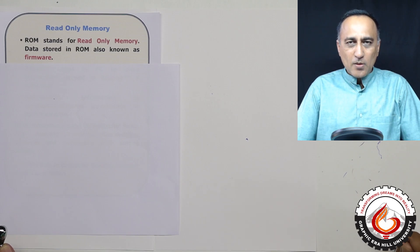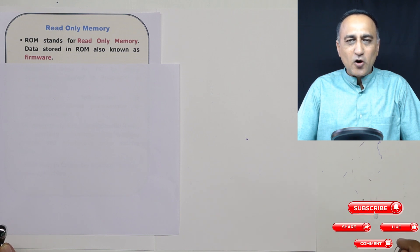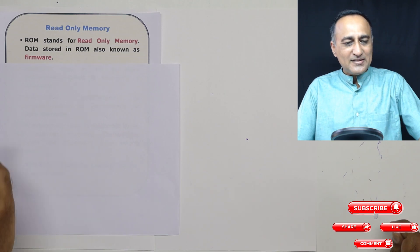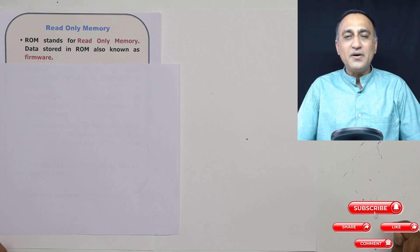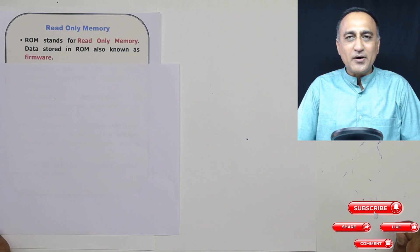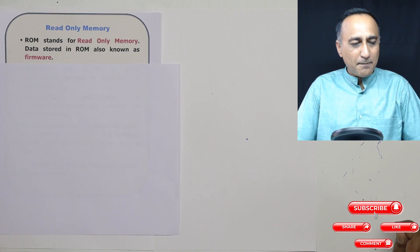Now ROM or read only memory is used to store data or code of a permanent nature. So if a program is written into a memory which is not modifiable, that particular piece of software is called firmware. Firmware is software of a permanent nature programmed or written onto a read only memory.